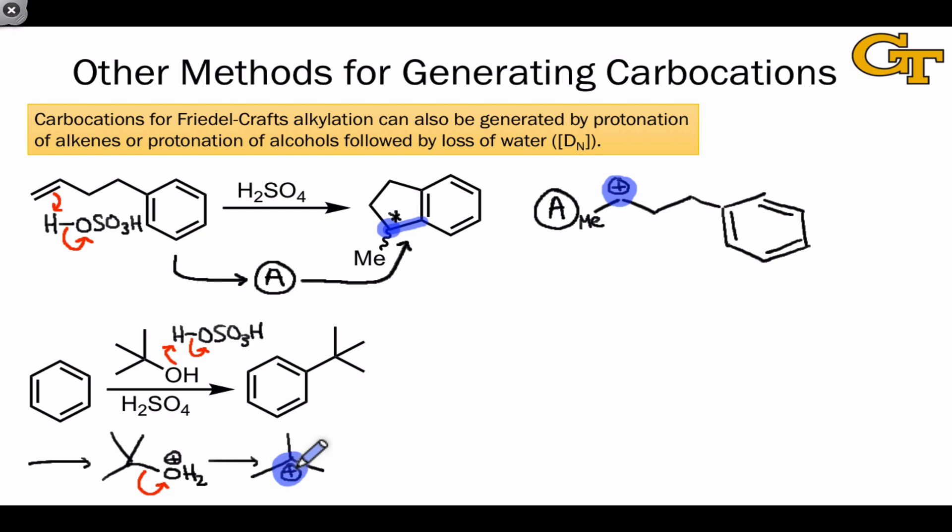From here, Friedel-Crafts alkylation with this tert-butyl cation leads to the observed product through a straightforward Friedel-Crafts alkylation mechanism. The unique aspect of this mechanism is that instead of using an alkyl halide together with AlCl3, we're using an alcohol together with a Bronsted acid. But actually, the electron flows and the general idea of activating something as a leaving group so that it leaves a carbon, making that carbon electrophilic, is the same in both cases, whether we use an alkyl halide and AlCl3, or an alcohol and a strong acid like H2SO4.